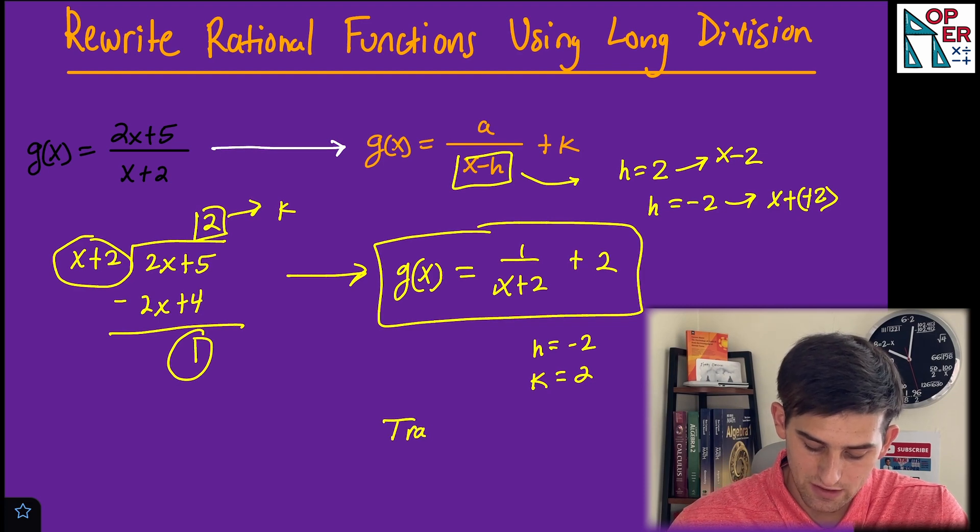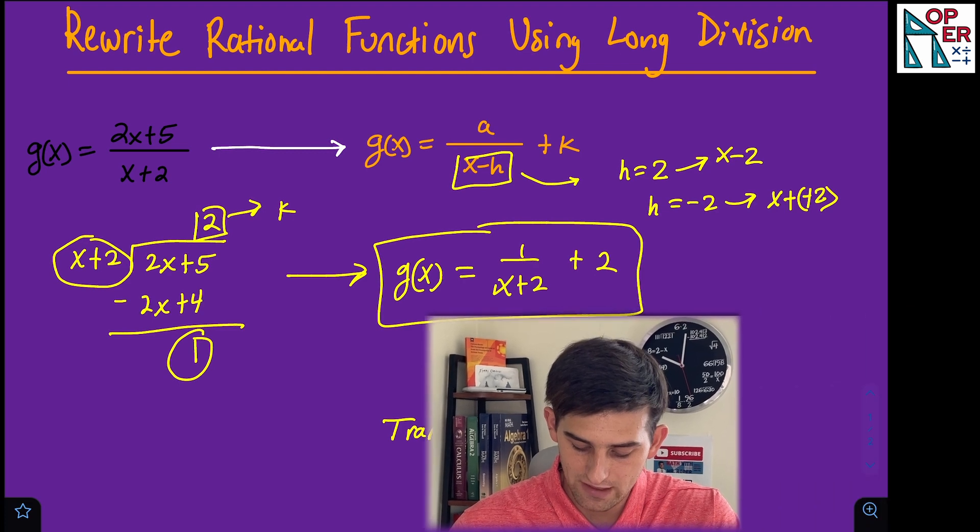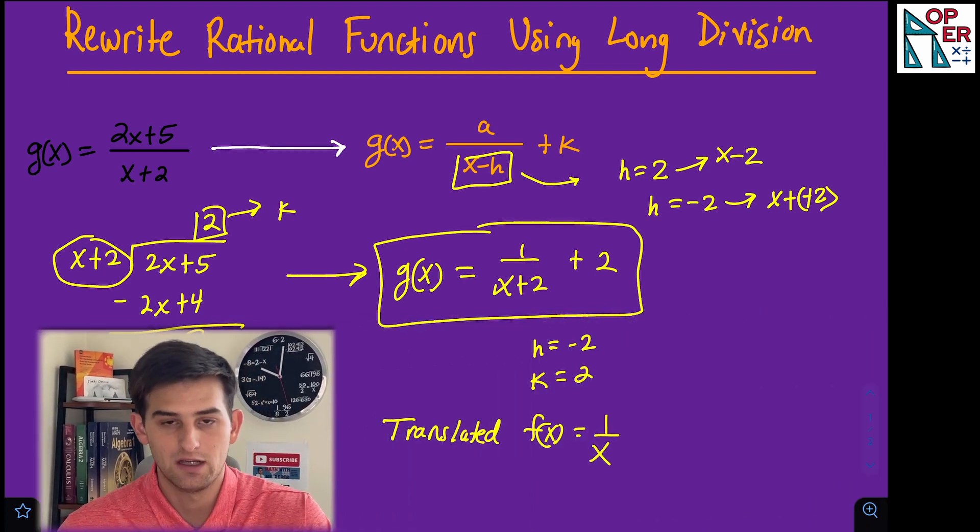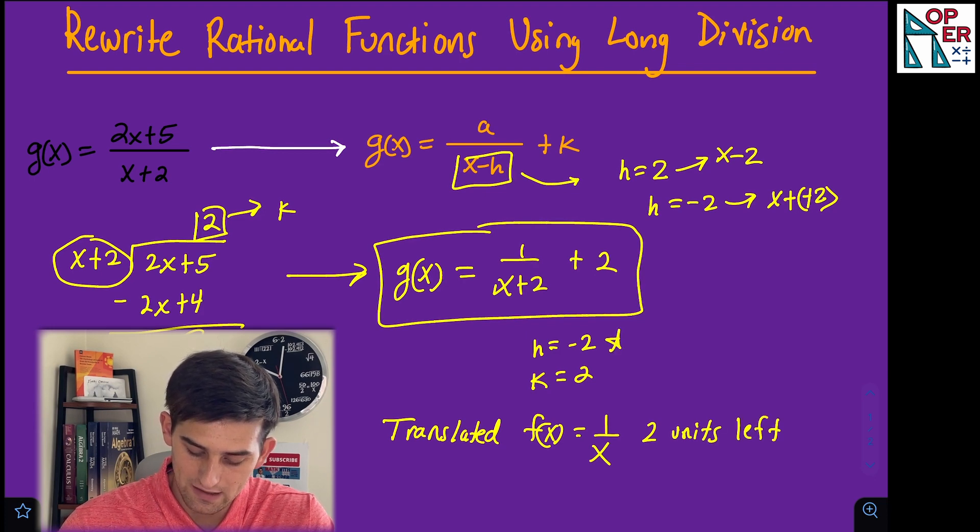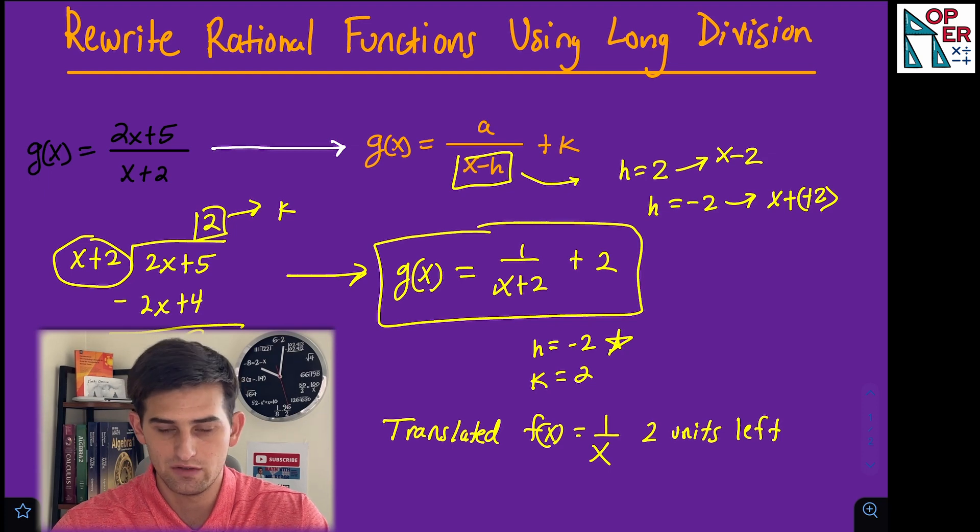So what does that tell us? It tells us that we translated the graph—our parent rational function f(x) = 1/x—two units to the left. That's our h of negative 2. That's what it's telling us.